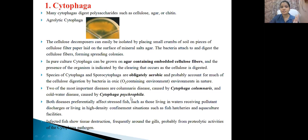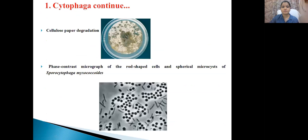On the basis of temperature, there are three types of organisms: mesophiles, psychrophiles, and thermophiles. Psychrophiles are low-temperature-tolerating organisms. Cytophaga psychrophila infects fishes that live in marine or oceanic environments. Now we will see its diagnosis, symptoms, and treatment. Before that, here are some glimpses of cellulose-degrading Cytophaga.